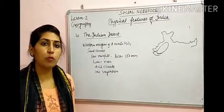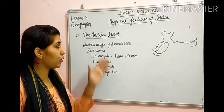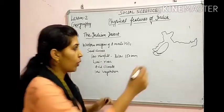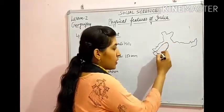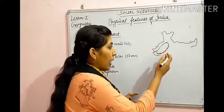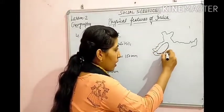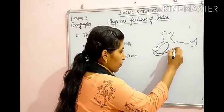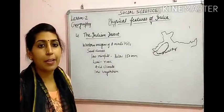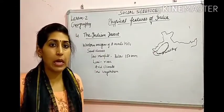The next physical feature of India is the Indian Desert, also called the Thar Desert or Western Desert. यह India के north-western part में है और Aravalli ranges के west में पड़ता है। यहाँ पर sand dunes देखने को मिलते हैं।